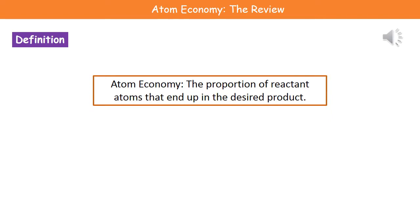Here is the definition for atom economy. Quite simply, it is the proportion of reactant atoms that end up in our desired product. When we look at our chemical equation, it's the atoms that have become the product we wanted to make, compared to the number of reactant atoms we started with.